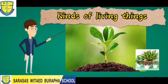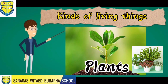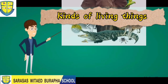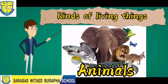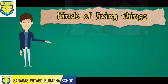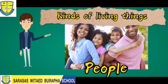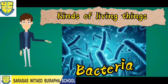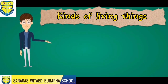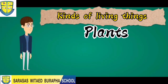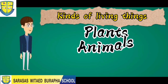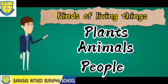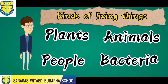Our first kind of living things are plants. Next on the list are animals. We also have people. And even bacteria is a living thing. So we have plants, animals, people, and even bacteria.